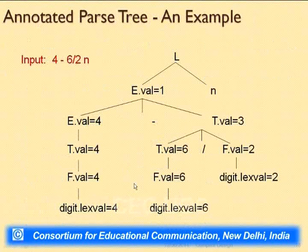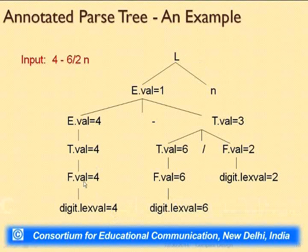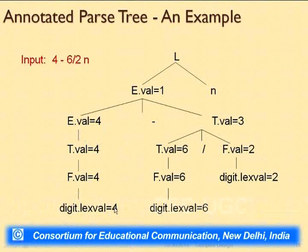Once you have the value at a leaf digit, you want it passed up to F. This corresponds to the production F derives digit. For this production, we write: F.val = digit.lexval. That rule has been written because that is the meaning we want — values are written the way we want information to travel. Then for the production T derives F, we want the value at F passed to T, so we write: T.val = F.val. The rule simply reflects the desired information flow.